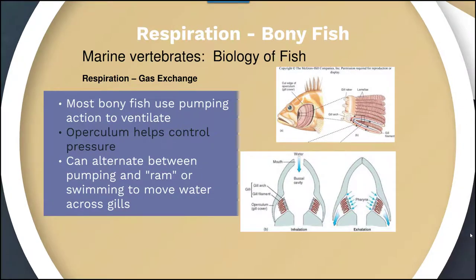Respiration in bony fish occurs through a pumping action, and the operculum — the covering to their gills — helps control water pressure. They can alternate between pumping and ram ventilation, or swimming, to move water across the gills. They can also pull water in through their mouth, which then moves past the gills, as shown in the figure.